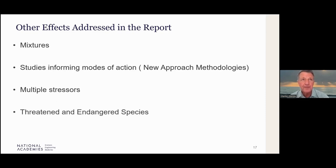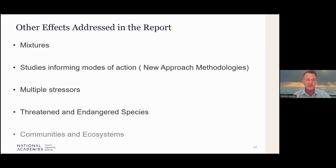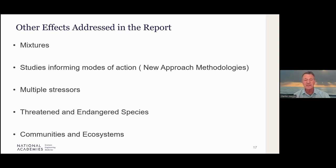We note in the report information on threatened and endangered species. A number of marine and freshwater species are threatened and endangered, and therefore it may be valuable to consider toxicity testing that could inform the potential for effects on these types of species — obviously using surrogate species. Finally, communities and ecosystems such as coral reefs are complex, both in terms of communities and ecosystems, and effects on one aspect of that system could have effects on other aspects, which the report discusses.